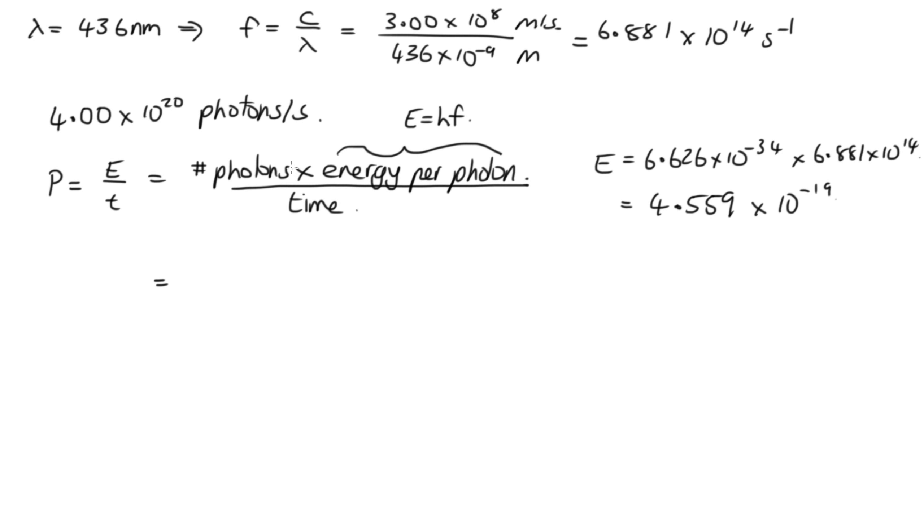Okay, so now we can put everything together. This part is equal to our 4.00 times 10 to the 20, and then energy per photon, that's the 4.559 times 10 to the minus 19. And solving that on the calculator, we end up with 182 watts. And that's to three significant figures because 436 nanometers and the 4.00 times 10 to the 20 were both given to three significant figures.